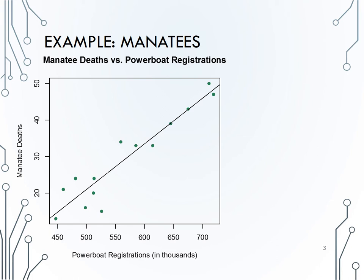Here you see a scatter plot of our data, with powerboat registrations, our x variable on the x-axis, and manatee deaths, the response variable, on the y-axis. How would you describe the form, strength, direction, and whether there are outliers or not for this scatter plot?